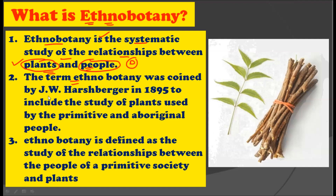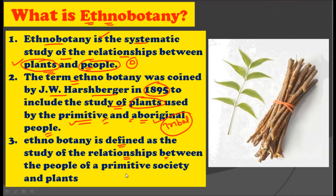The term ethnobotany was first coined by J.W. Harshberger in 1895 to include the study of plants used by primitive and aboriginal people — that is, those commonly referred to today as tribal peoples. Ethnobotany may also be defined as the study of the relationship between people of primitive society and plants, literally including tribal people and their use of plants.